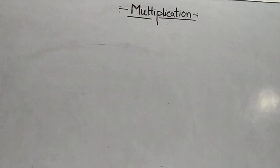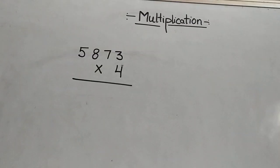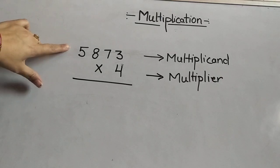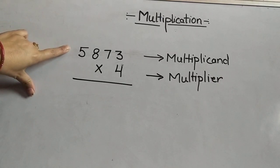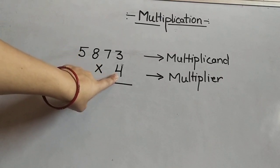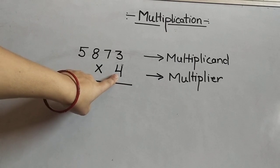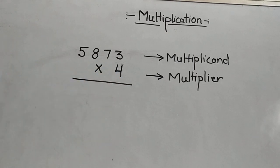Now let us see some examples multiplying by a 1-digit multiplier. The question is: what is a multiplier? The number which you are multiplying is called the multiplicand, and the number by which you are multiplying is called the multiplier. So 5873 is the multiplicand in this question and 4 is the multiplier.